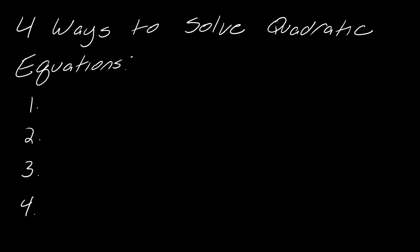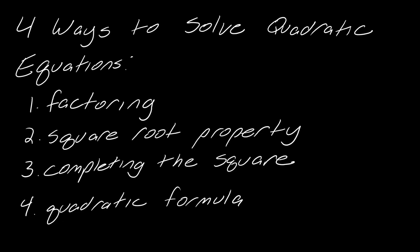So first things first, what are the four ways that we could solve a quadratic equation? I'd strongly recommend that you pause here for a second just to see if you can list them — it's a really good quiz for yourself. The four ways to solve a quadratic are: factoring, the square root property, completing the square, and the quadratic formula. The square root property is kind of embedded in completing the square, but it is something that you could use by itself.